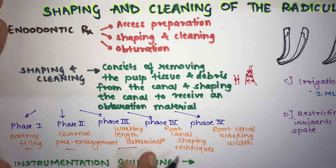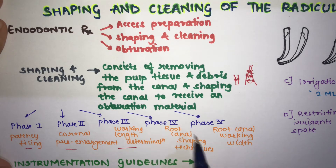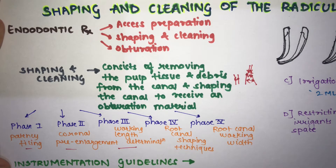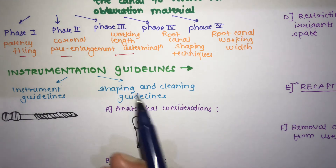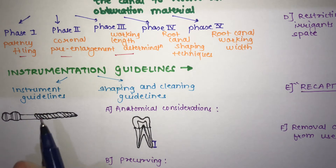The first three phases have already been explained in the video on working length determination, which also covers the electronic apex locator. Moving towards the fourth phase — root canal shaping techniques — you should first know the guidelines for instrumentation. There are instrument guidelines and shaping and cleaning guidelines.